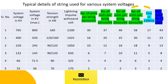Here, typical details of strings used for various system voltages are tabulated for creepage values of 16 mm/kV, 20 mm/kV, 25 mm/kV, and 31 mm/kV, with disk lightning withstand voltage of 130 kV peak and disk rated voltage of 11 kV.